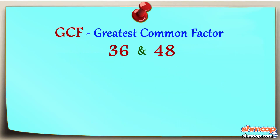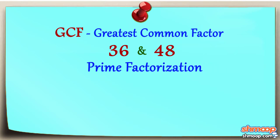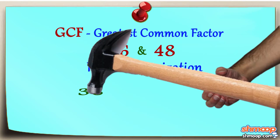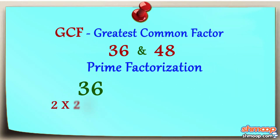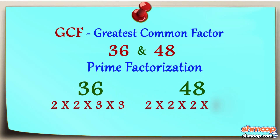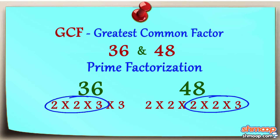A good way to find the GCF is to first use prime factorization. 36 breaks down into 2 times 2 times 3 times 3. 48 breaks down into 2 times 2 times 2 times 2 times 3. The numbers that the two have in common are the two twos and a three. Multiply those out, and voila — 12.